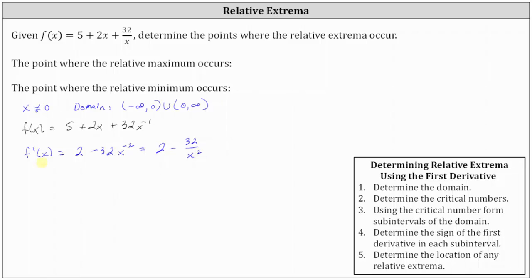Notice the first derivative is undefined at x equals zero because of division by zero. However, x equals zero is not a critical number because it is not in the domain.